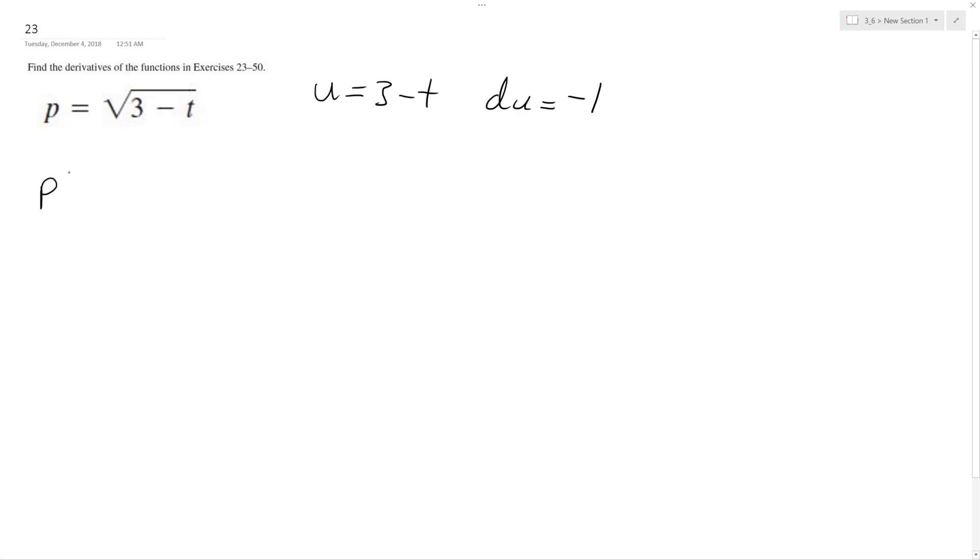Okay, so I'm going to set p of u equal to u raised to the 1 half. It's the same thing as saying square root of u. So p prime of u is going to be equal to 1 half u raised to the negative 1 half, du. It's important to put that there.